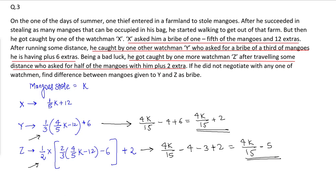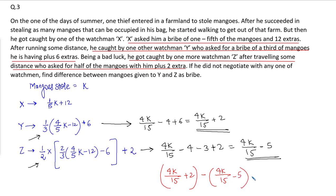We need to find the difference. So our answer is: (4k/15 + 2) minus (4k/15 minus 5). The 4k/15 terms cancel, and 2 minus (minus 5) gives 7. So our answer is 7. The difference between the number of mangoes given to Y and Z is 7.